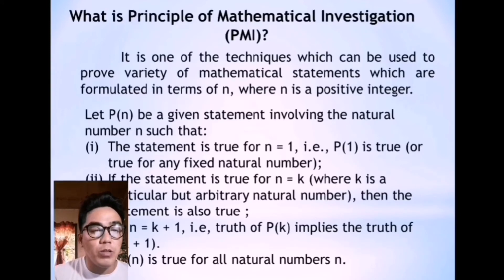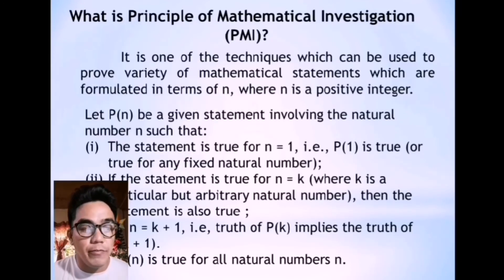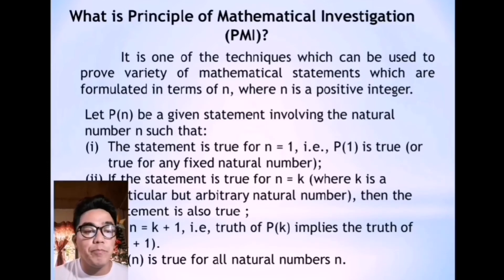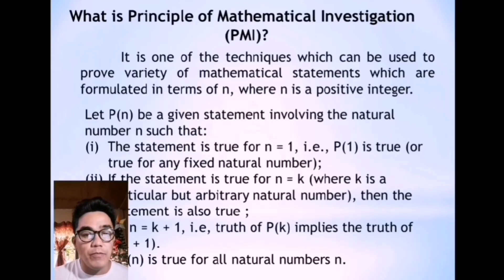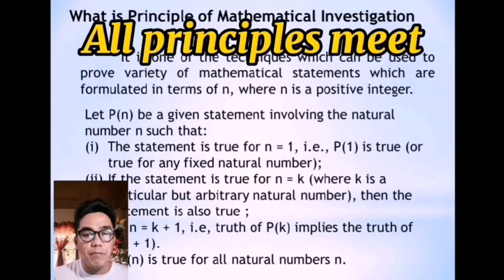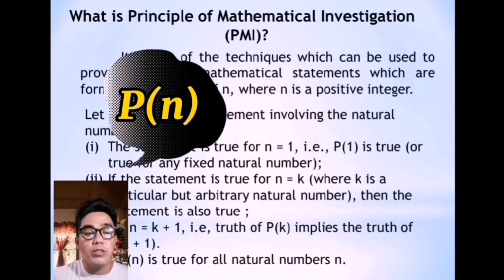Number 2: if the statement is true for n equals k, where k is a particular but arbitrary natural number, then the statement is also true. Third, for n equals k plus 1, the truth of P of k implies the truth of P of k plus 1. If all these principles are met by the given problem, then we can say that P of n is true for all natural numbers n.